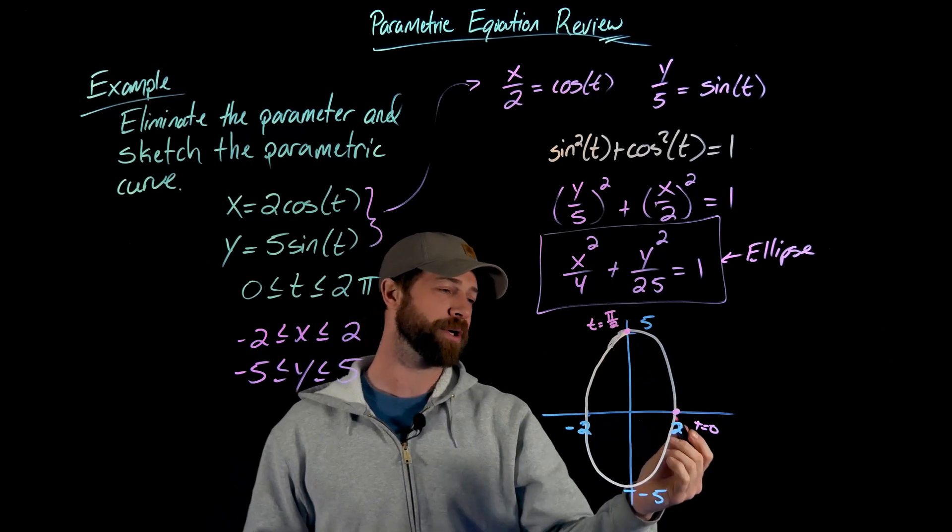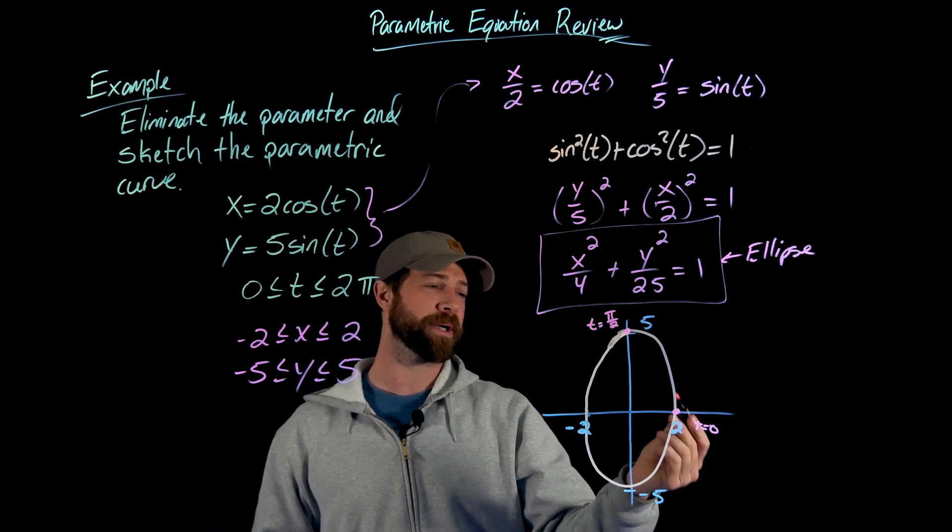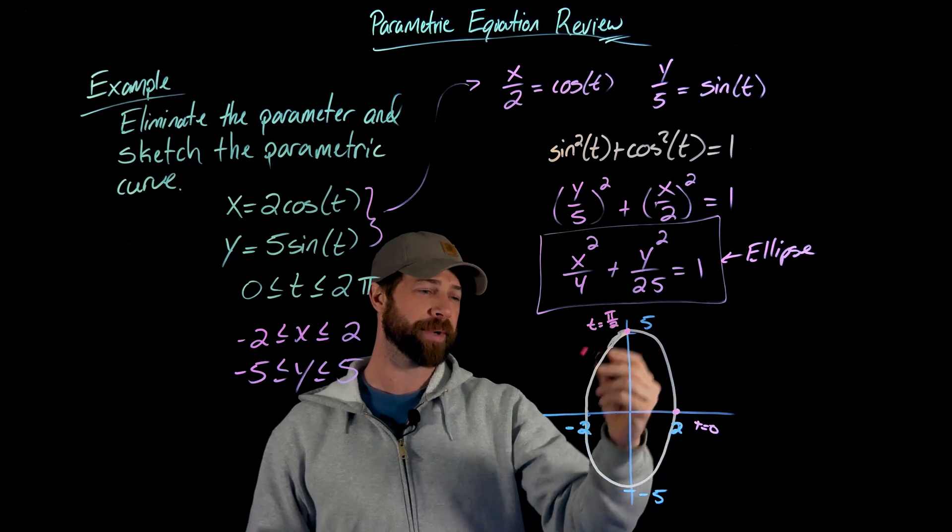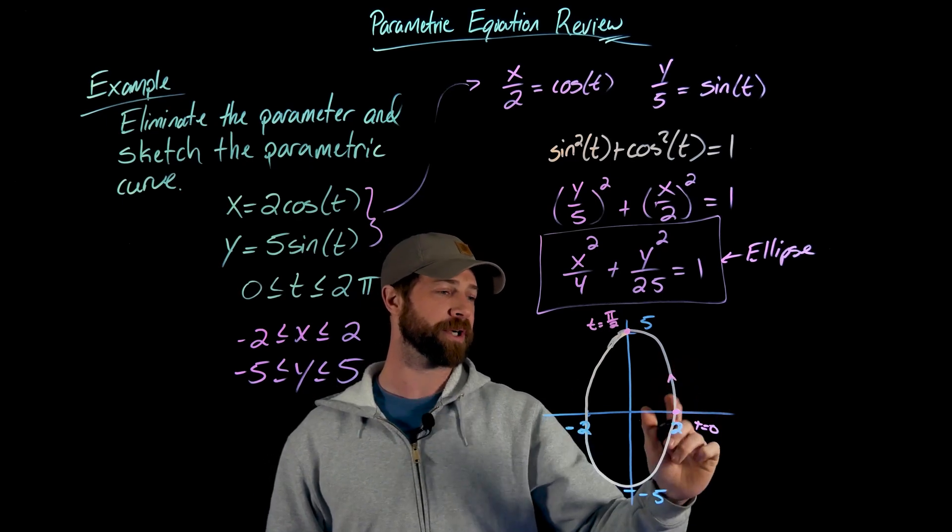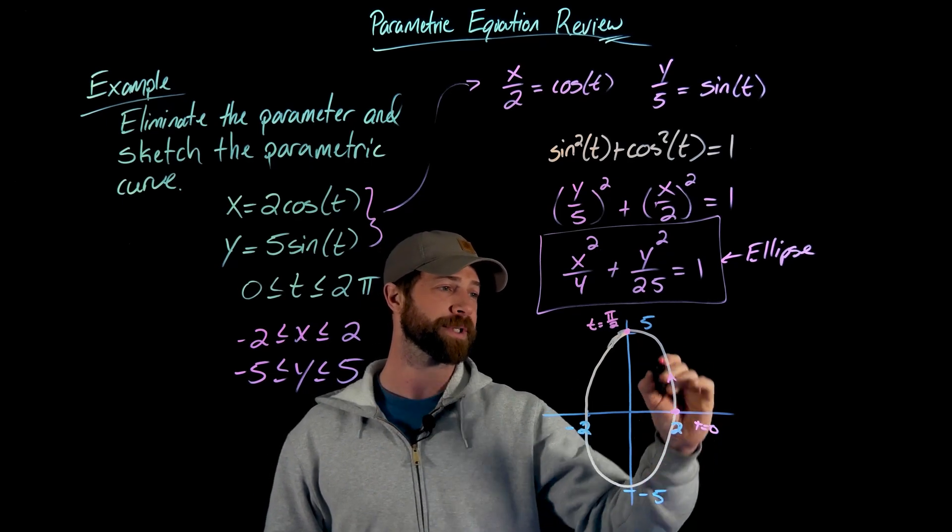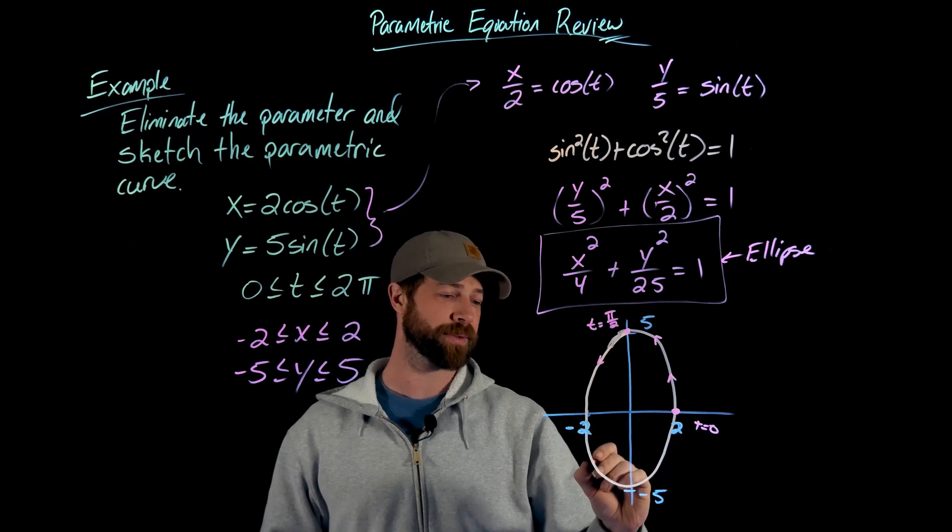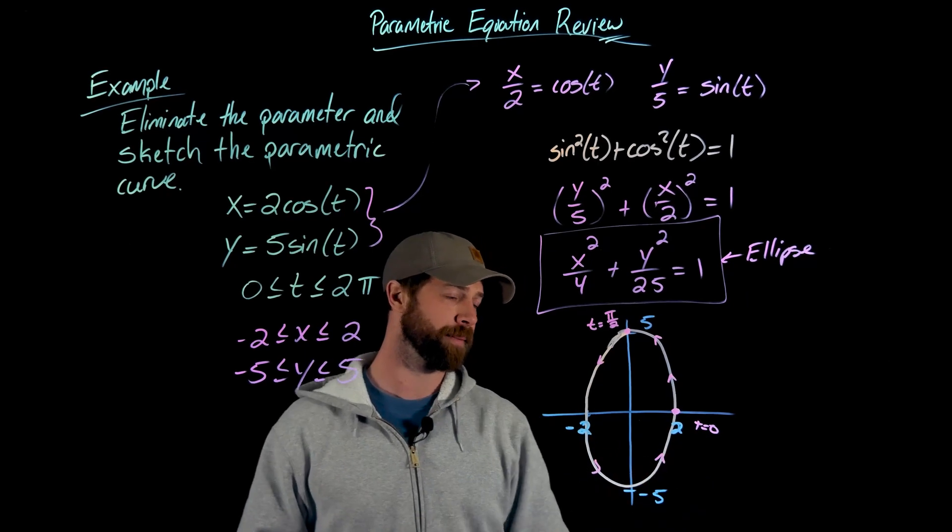And importantly you can see what's going on here. I'm starting at t equals zero. I could have tested more points but I'm getting the idea that this parametric curve starts here at two comma zero and is flowing this way around.